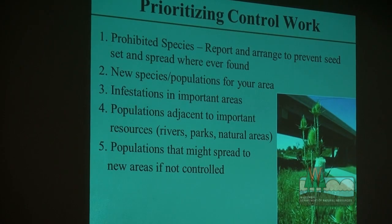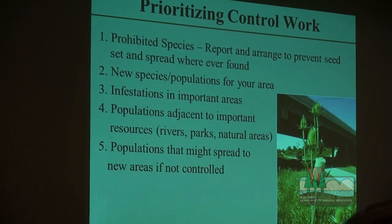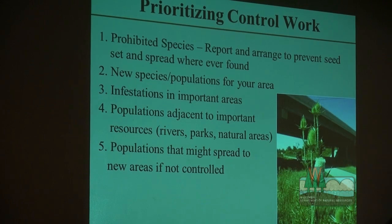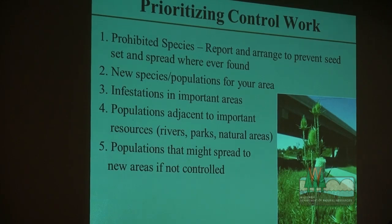For suggested priorities: prohibited species not yet here or only in a few areas should be the highest priority for control and reporting. If you find any of these, please let us know. If it's a new species or population for your area — such as hedge parsley moving in — it's also high priority. If it's in an important area like a state natural area, that's high priority. If it's adjacent to a spread corridor like a river or trailhead, that might also be high priority. Think through what's the highest priority for you.